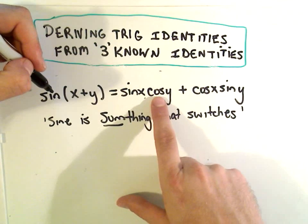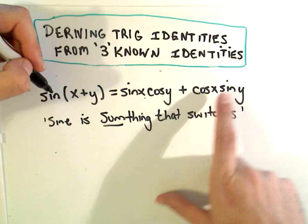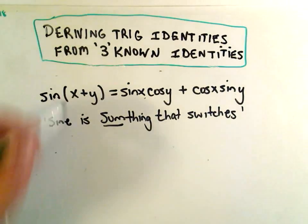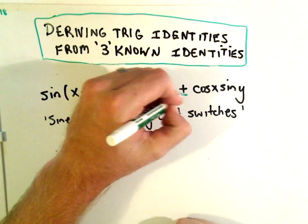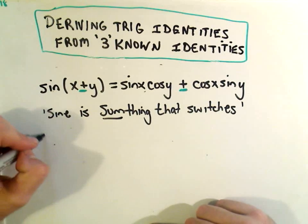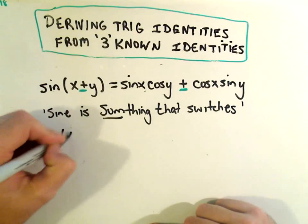If there happens to be a minus sign in between, there's going to be a minus sign in between here. Okay, so from this I remember cosine of x plus y.